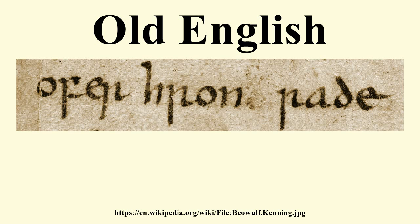Old English is one of the West Germanic languages, and its closest relatives are Old Frisian and Old Saxon. Like other Old Germanic languages, it is very different from Modern English and difficult for Modern English speakers to understand without study. Old English grammar is quite similar to that of Modern German: nouns, adjectives, pronouns, and verbs have many inflectional endings and forms, and word order is much freer. The oldest Old English inscriptions were written using a runic system, but from about the ninth century this was replaced by a version of the Latin alphabet.